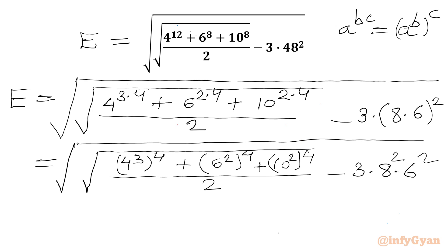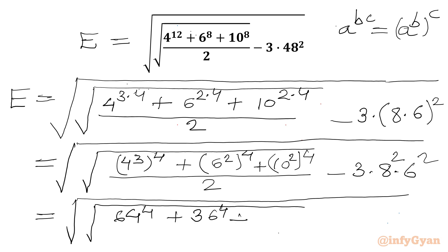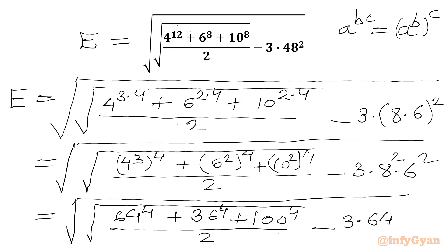Now, 4 cubed is 64, 6 squared is 36, and 10 squared is 100. So we write: square root of 64 to the power 4, plus 36 to the power 4, plus 100 to the power 4, over 2, minus 3 times 64 times 36.